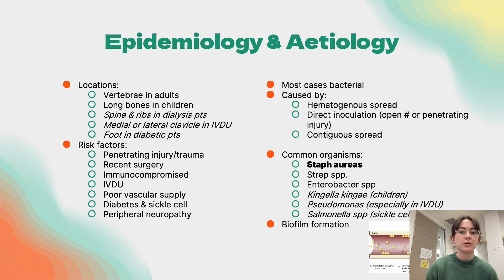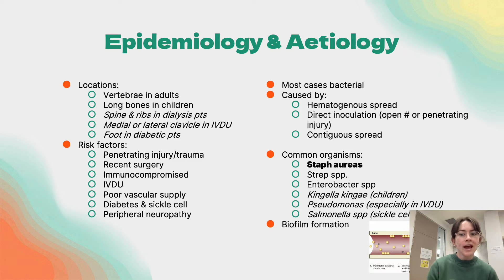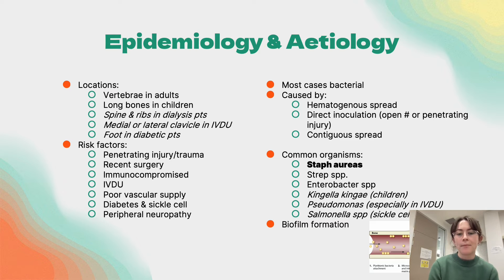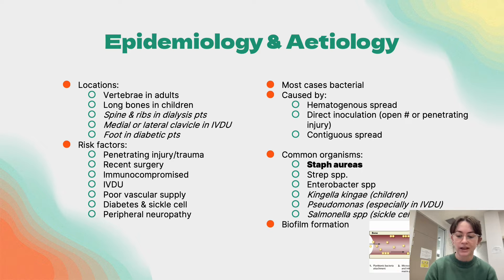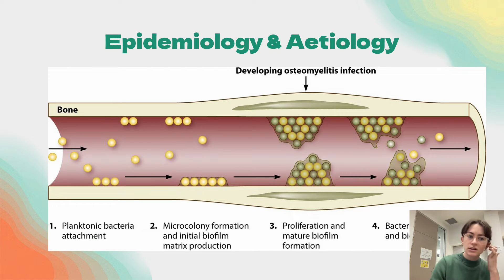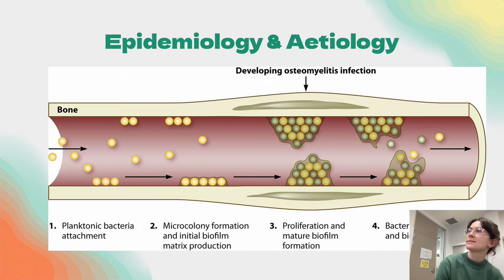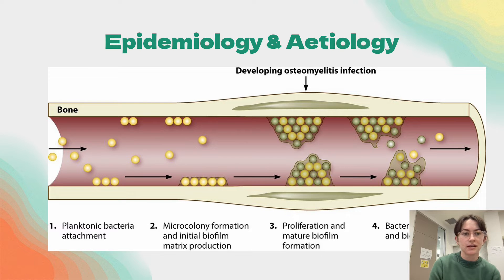Contiguous spread can be bacterial, mycobacterial, or fungal. Organisms can also vary by age or risk group. When bacteria are introduced to bone, they attach to the substrate and create a matrix for a biofilm, which allows them to enter a sessile phase, making them quite resistant to antibiotics — which is why osteomyelitis is hard to treat with antibiotics alone.